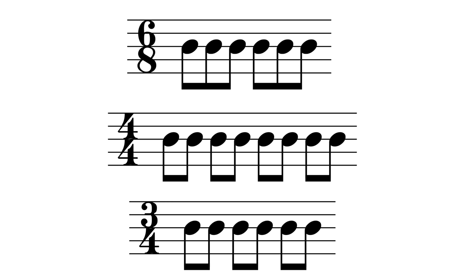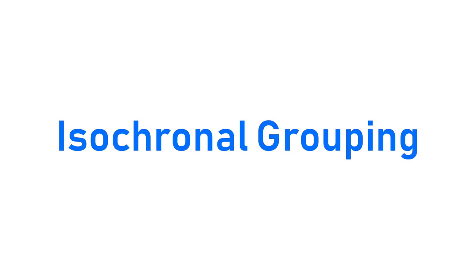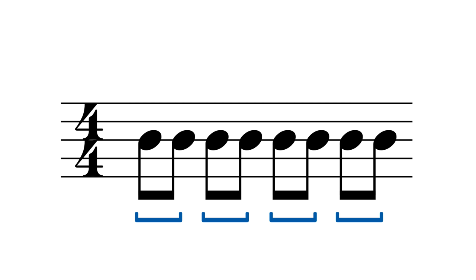Most western music, traditional and modern, stick to time signatures with a regular isochronal grouping of the beats. In other words, all of the beats in the bar are uniform, they all have the same duration.